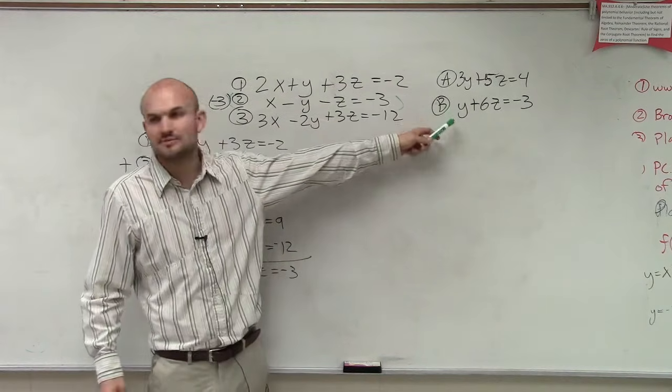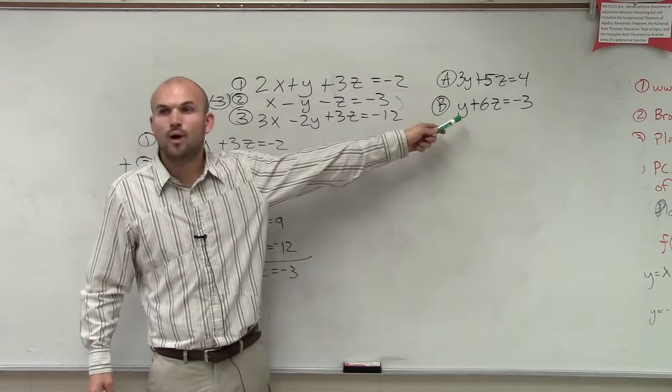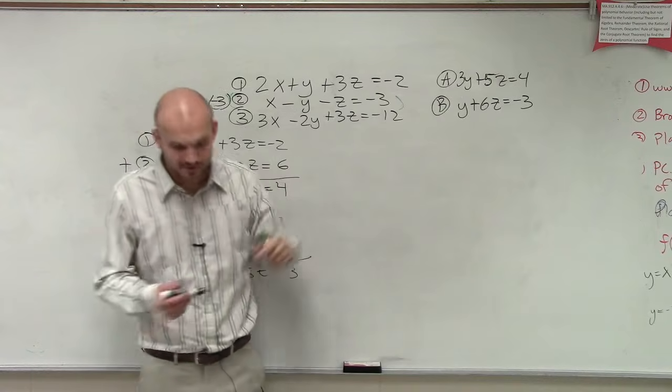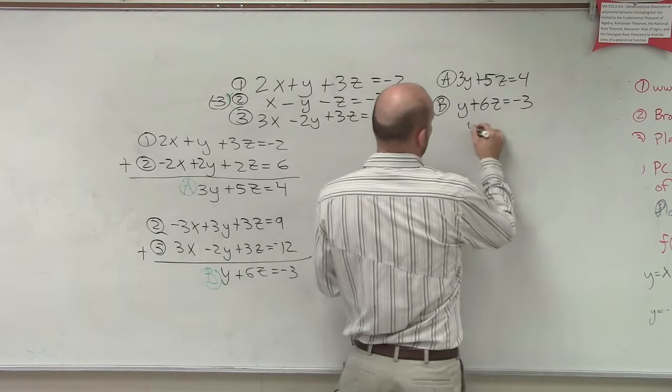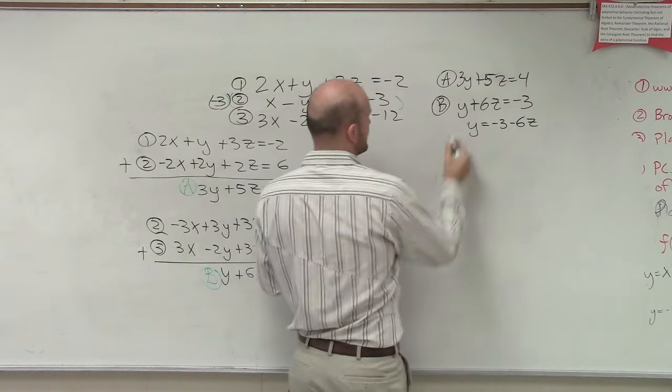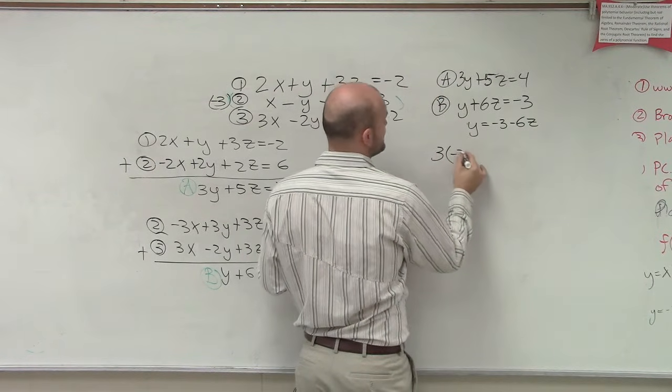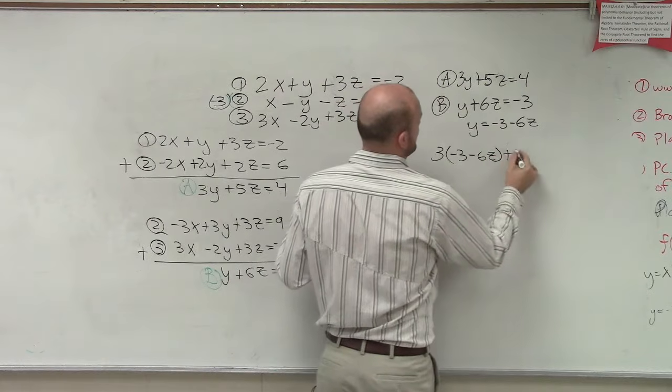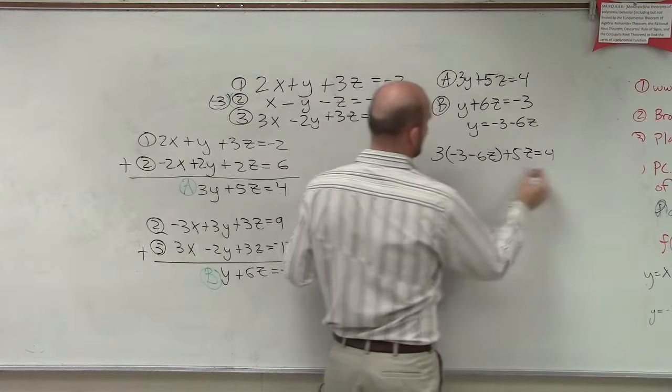I would probably say, oh, let's use substitution. Let's substitute y, right? Let's solve for y and substitute it in. So I could say y equals negative 3 minus 6z. Plug that in. You have three times negative 3 minus 6z plus 5z equals 4.